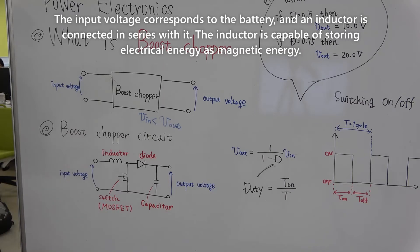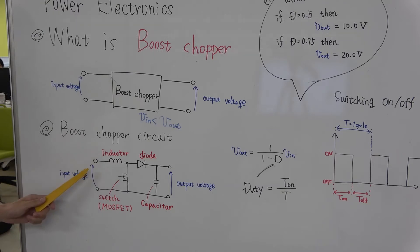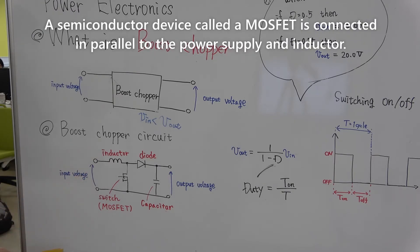The inductor is capable of storing electronic energy as magnetic energy. A semiconductor device called a MOSFET is connected in parallel to the power supply and inductor.